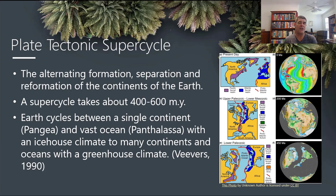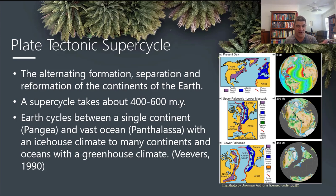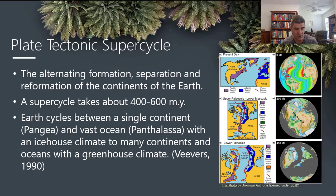One of the other things that may accompany this supercycle is a shift from an ice house climate — a very cold climate — to a greenhouse climate. We use those two terms as opposites to identify one kind of environment where we have falling temperatures and one where we have rising temperatures. Some of that has to do with the way the continents are distributed and the oceans around those different continents.